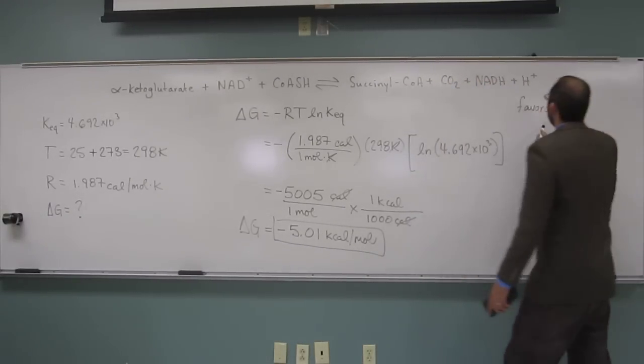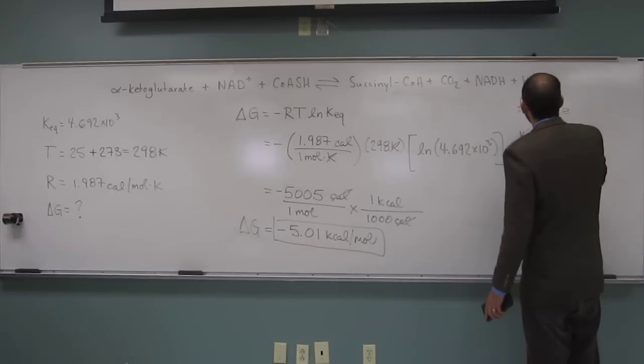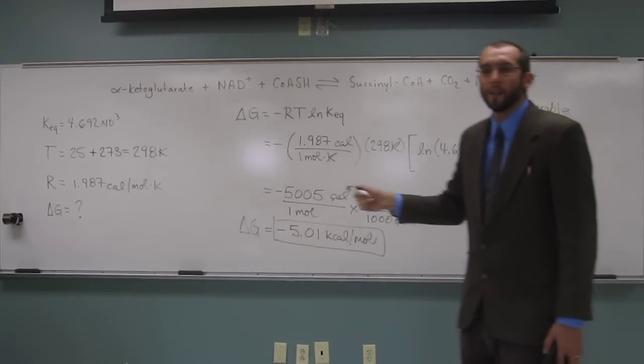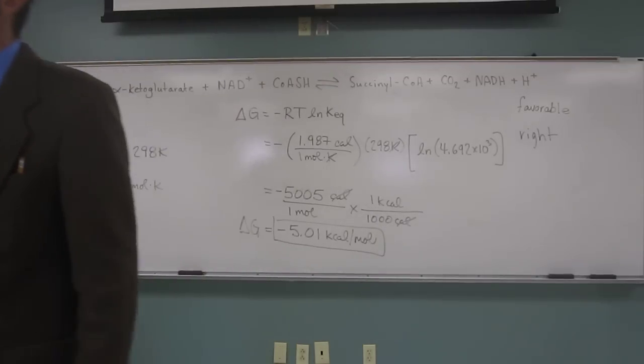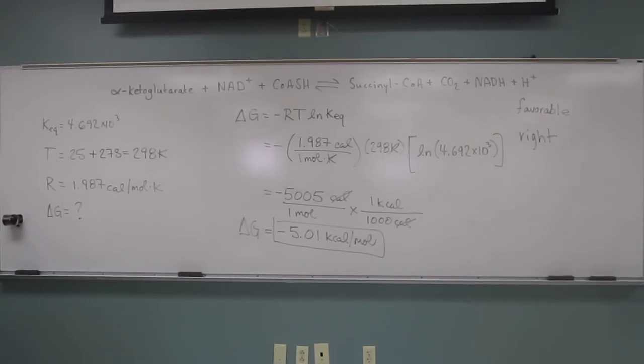So that kind of leads into our next question. So which side of the equilibrium does this reaction lie? On the left or on the right? The right. So delta G negative, favorable, exergonic. Any questions on this one? Wonderful.